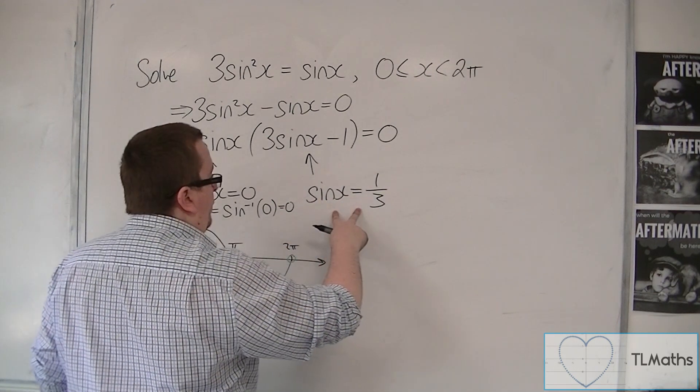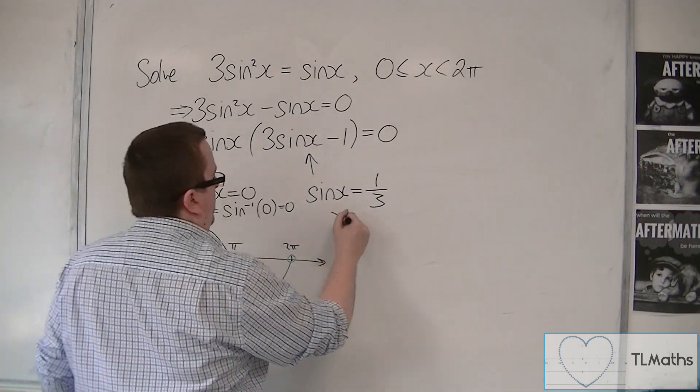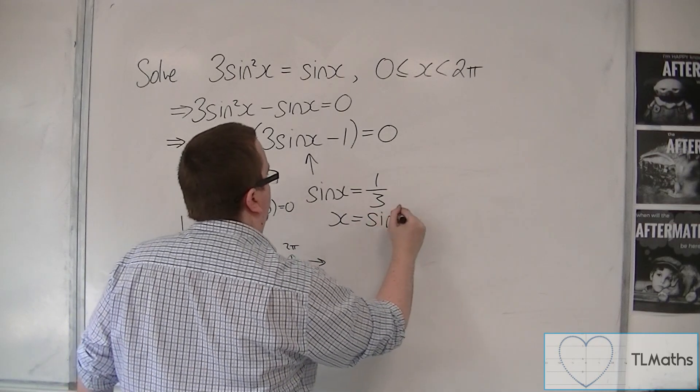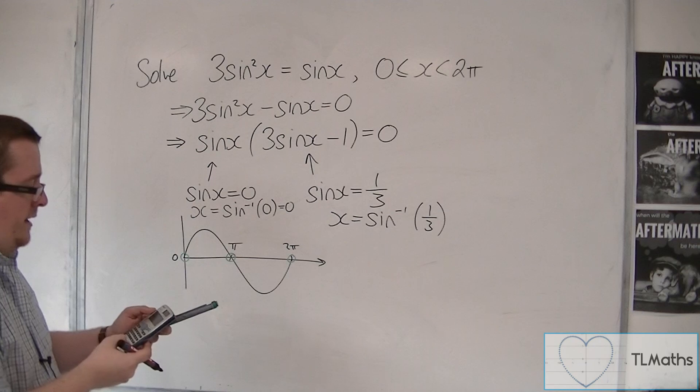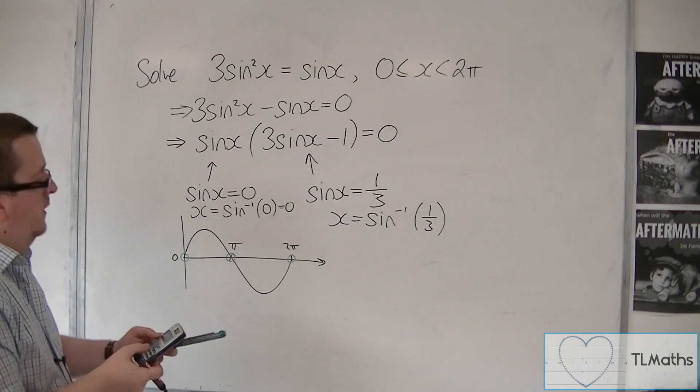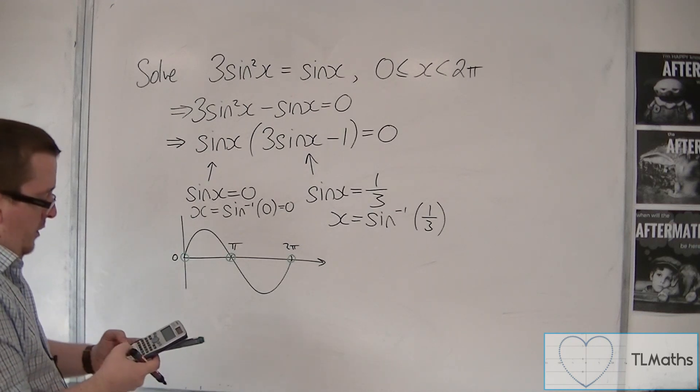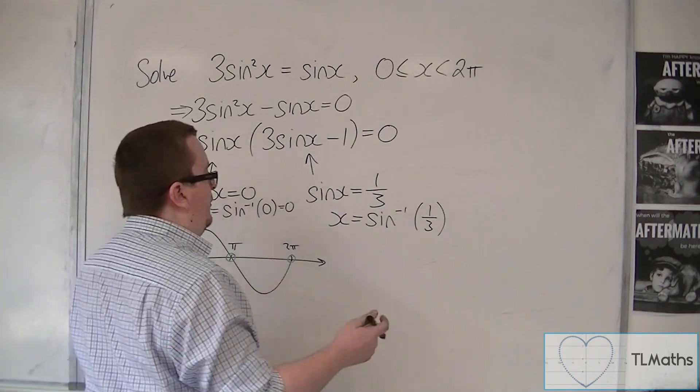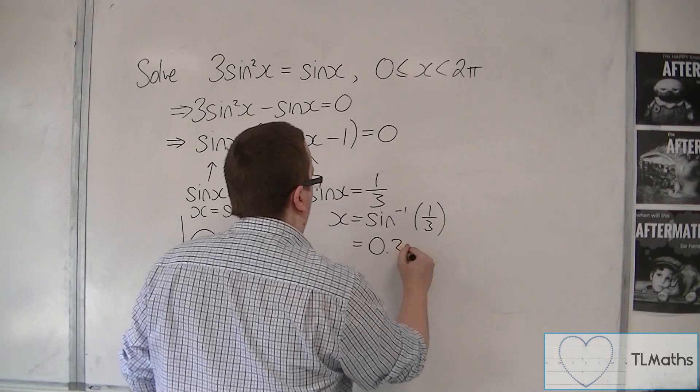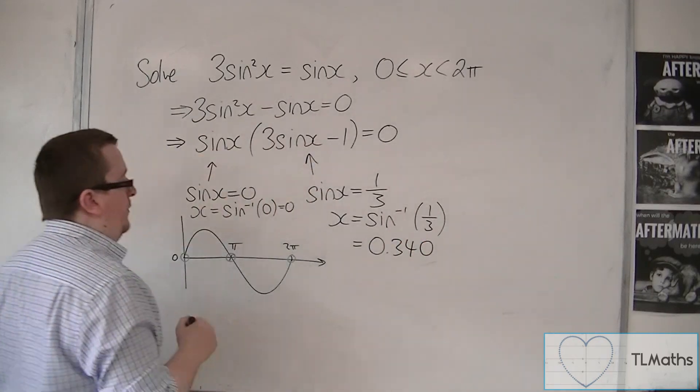We now need to solve sine x is 1 third. So we inverse sine 1 third. Making sure our calculator is in radians. So inverse sine of 1 third is 0.340 to three significant figures,